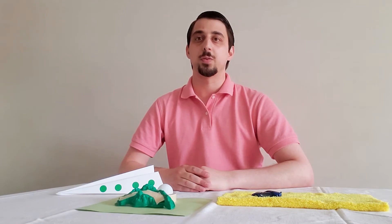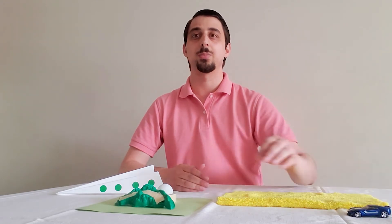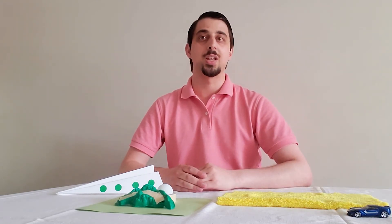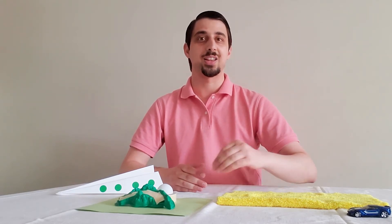While smoother surfaces allow objects to slide more easily. If you push a toy car on a smooth surface, like a tabletop or solid floor, it moves faster because there is less friction, like this.